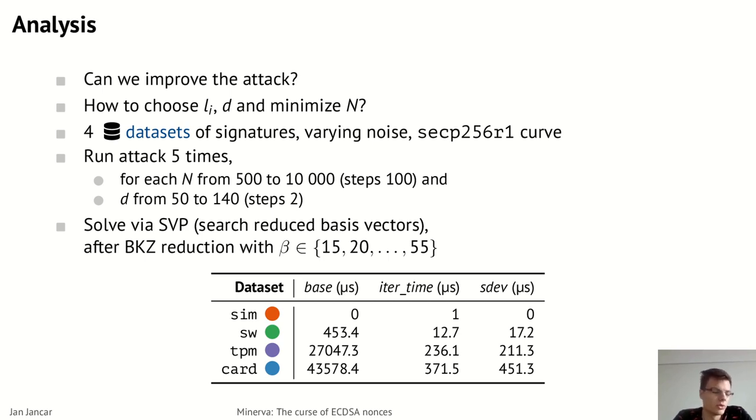The card dataset obviously has the largest noise because it's measured on the reader side and the card was kind of noisy and the exchange of commands and responses between the card and the reader also added a lot of noise. The simulated dataset obviously has no noise. Now to have an insight into the behavior of the attack with regards to the number of signatures M and to the dimension of the lattice or the number of used signatures D, we run the attack five times randomly sampling N signatures out of the selected dataset and we do this for a grid of parameters N and D.